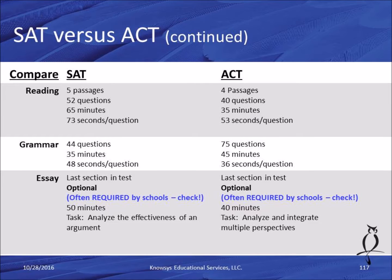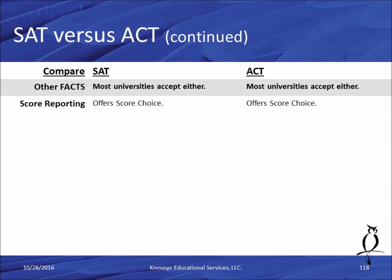The ACT science section has no equivalent on the SAT. As noted, it's analysis and interpretation of complex graphs — 40 questions in 35 minutes, about 53 seconds per question. For reading: SAT has 52 questions and ACT has 40, but SAT gives 73 seconds per question versus ACT's 53 — an extra 20 seconds per question on the SAT. For grammar: 44 SAT questions versus 75 ACT questions — SAT gives 48 seconds per question, ACT gives only 36.